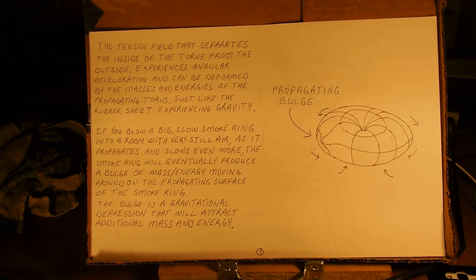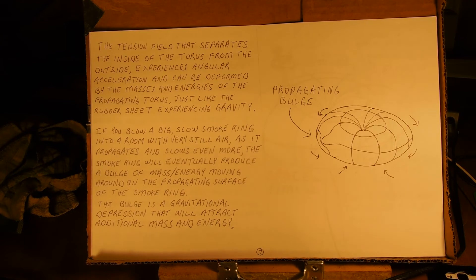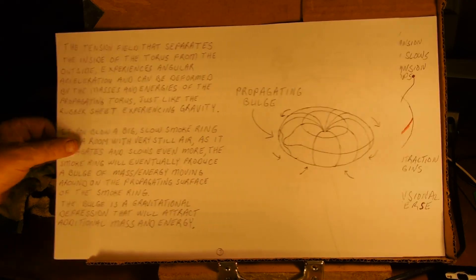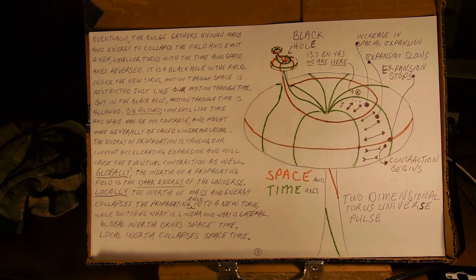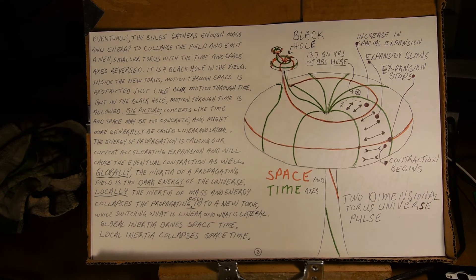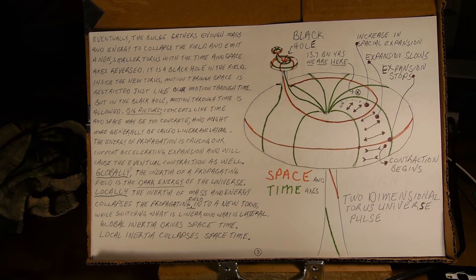If you blow a big, slow smoke ring into a room with very still air, as it propagates and slows, the smoke ring will eventually produce a bulge of mass energy moving around on its propagating surface. The bulge is a gravitational depression that will attract additional mass and energy. Eventually the bulge gathers enough mass and energy to collapse the field and emit a new, smaller torus with the time and space axes reversed — it is a black hole in the field. Inside the new torus, motion through space is restricted, just like our motion through time, but in a black hole, motion through time is allowed. Big picture, concepts like time and space may be too concrete and might more generally be called linear and lateral.